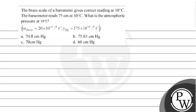Hello, Bacho. Let's read the question. The brass scale of barometer gives correct reading at 10 degree Celsius. The barometer reads 75 centimeter at 30 degree Celsius. What is the atmospheric pressure at 10 degree Celsius? Here, coefficient of expansion for brass is 20 into 10 to the power minus 6 per degree Celsius and for mercury it is 175 into 10 to the power minus 6 per degree Celsius.